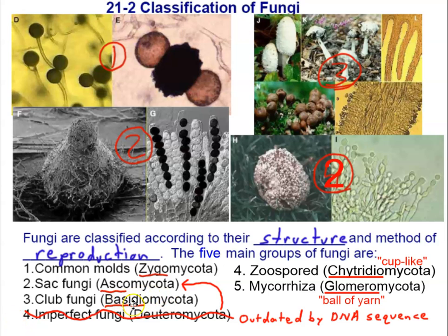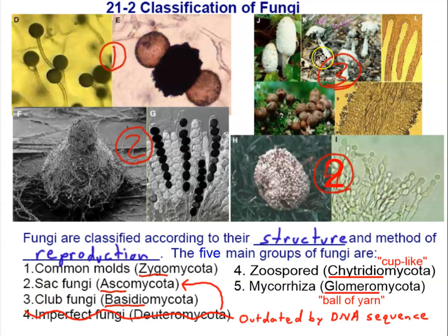Basidiomycota is named for its sexual reproductive structure and is known as the club fungi. The sexual reproductive structures are known as basidia, and 'basidium' means club — so they're known as the club fungi because of the shape of their sexual spore-producing structures. When you think Basidiomycota, think mushroom or toadstool. The underside of a mushroom has gills, which are lined with those basidia, those reproductive structures. The same is true in ascomycete fungi, where the gills are lined with structures known as asci.